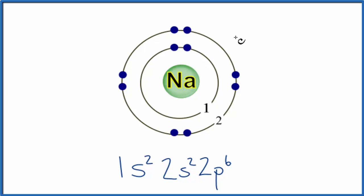But we lost a negative charge. So now the sodium ion will have an overall charge of 1+. And we could just write that as Na+. That's the sodium cation.